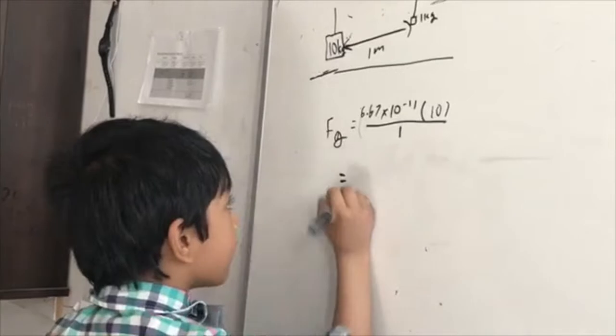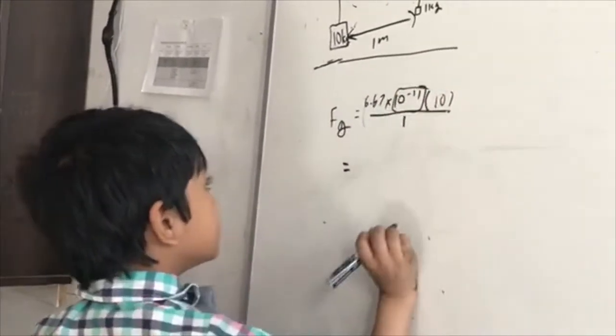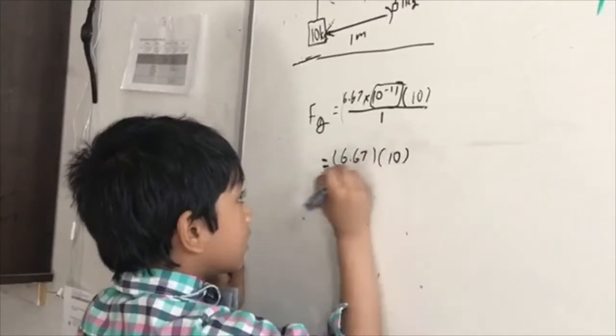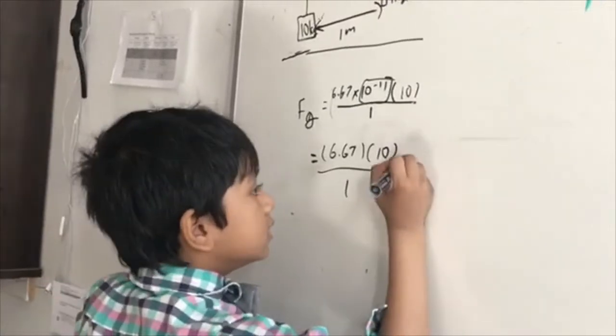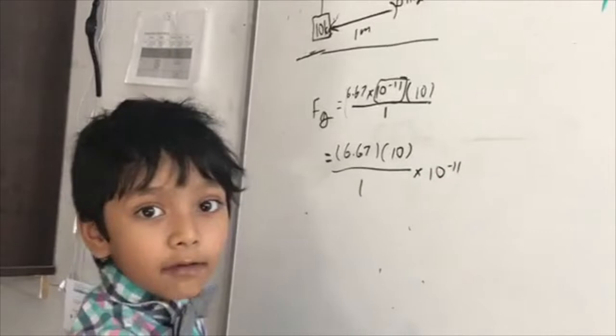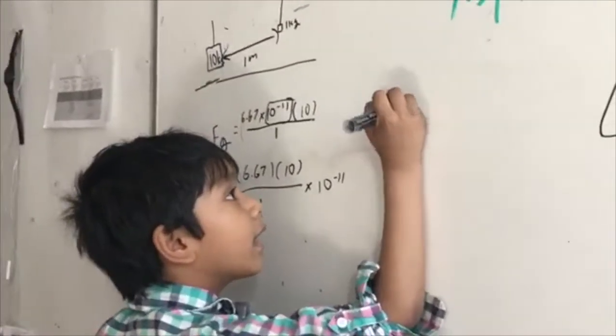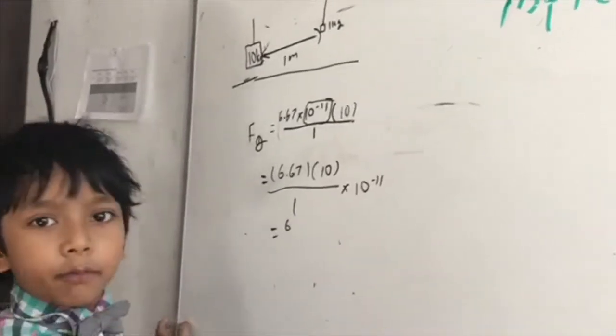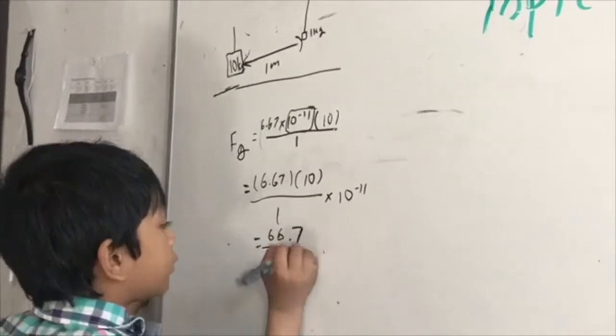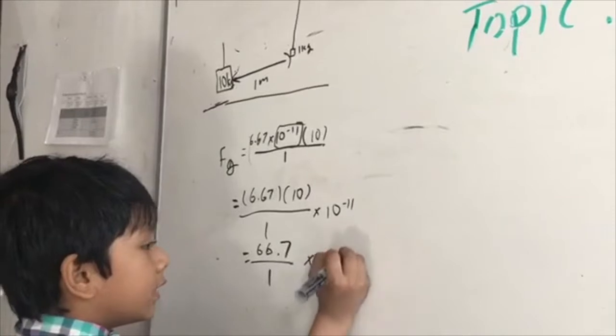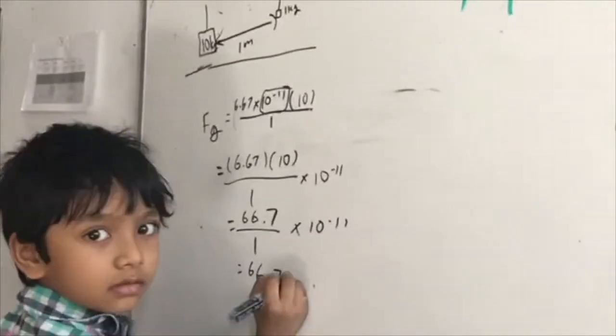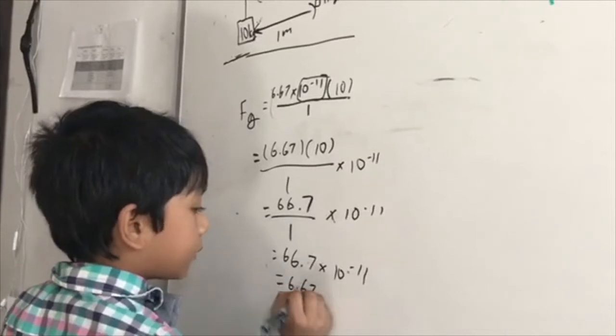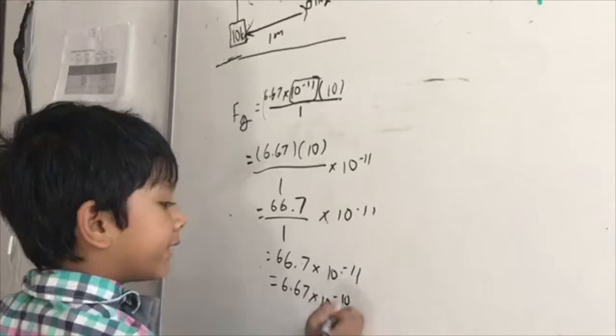Now, we'll have to put this here for later. So, 6.67 times 10 divided by 1 times 10 raised to the negative 11. If you look at PEMDAS, you can see the multiplication goes first in division. So, this is 66.7 divided by 1 times 10 raised to the negative 11. Which is 6.67 times 10 raised to the negative 10 newtons.